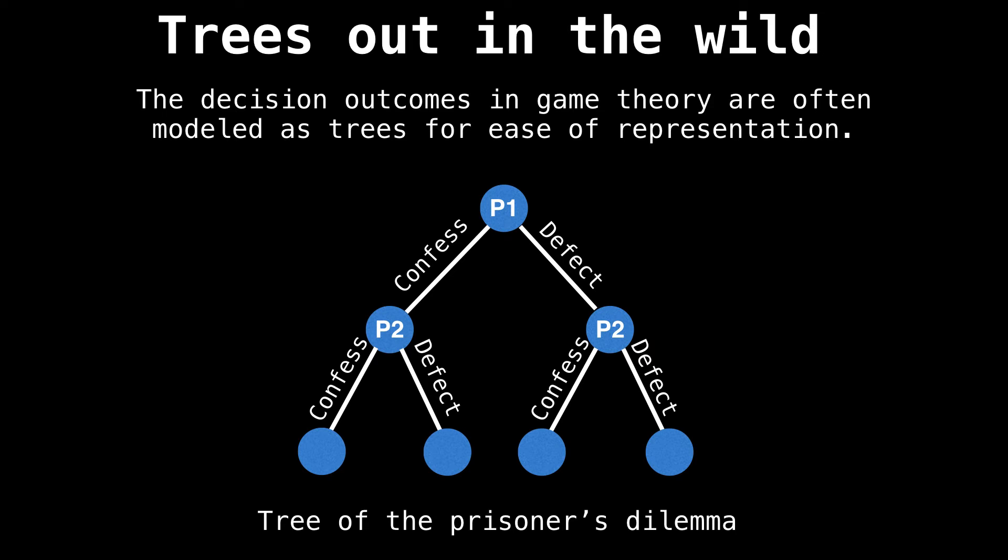Another large application of trees is in game theory to model decisions and courses of action. On this slide is the famous prisoner's dilemma problem and its four outcomes for whether each prisoner chooses to confess or to defect.